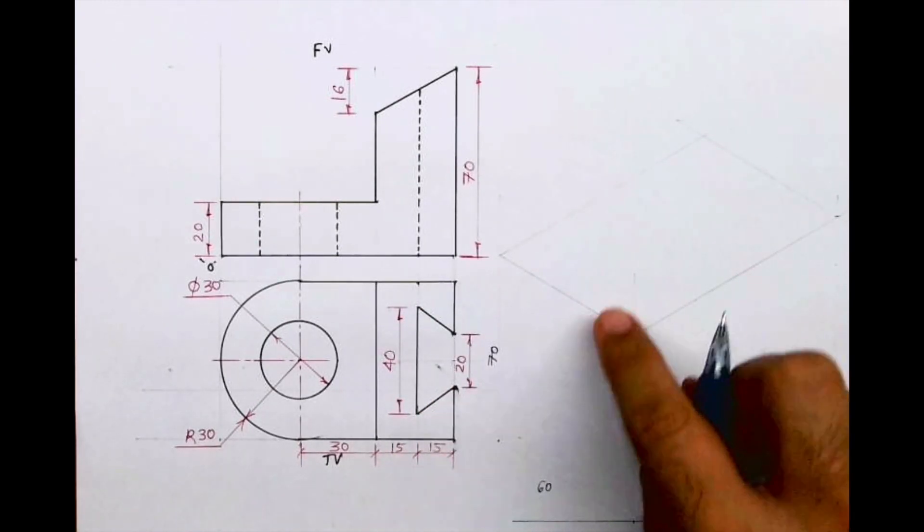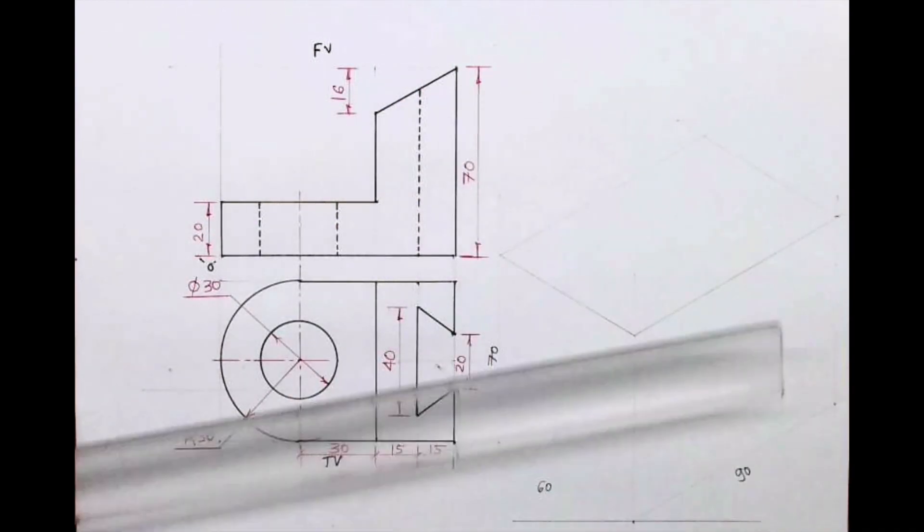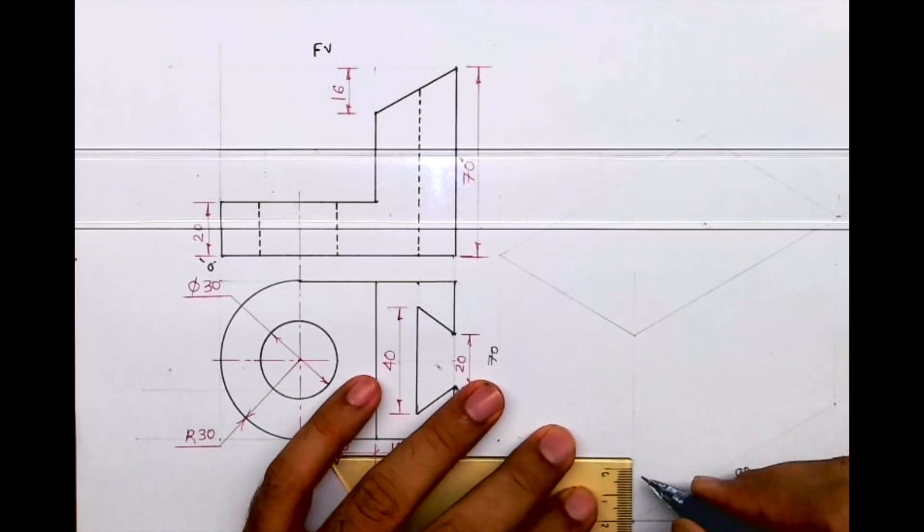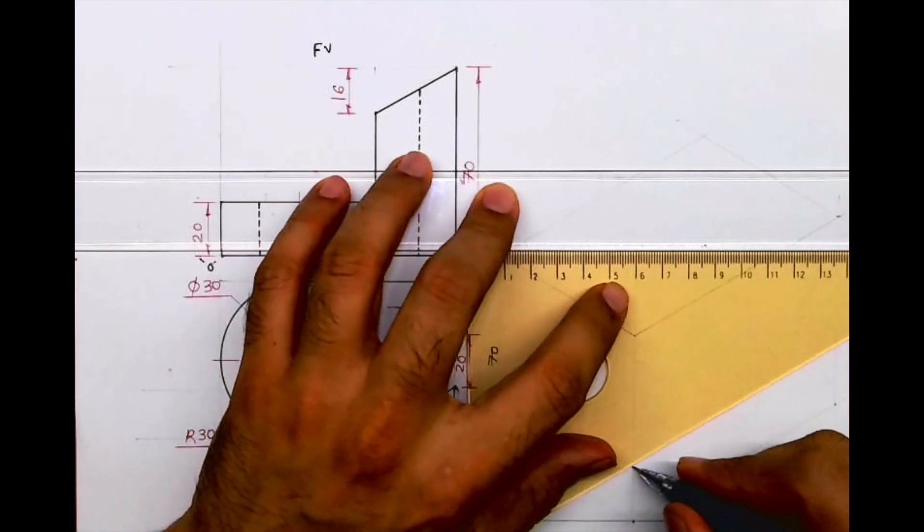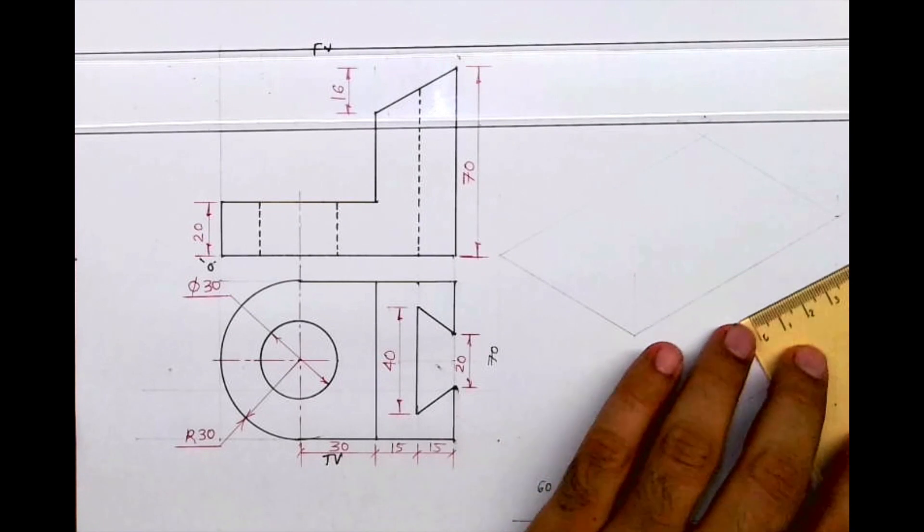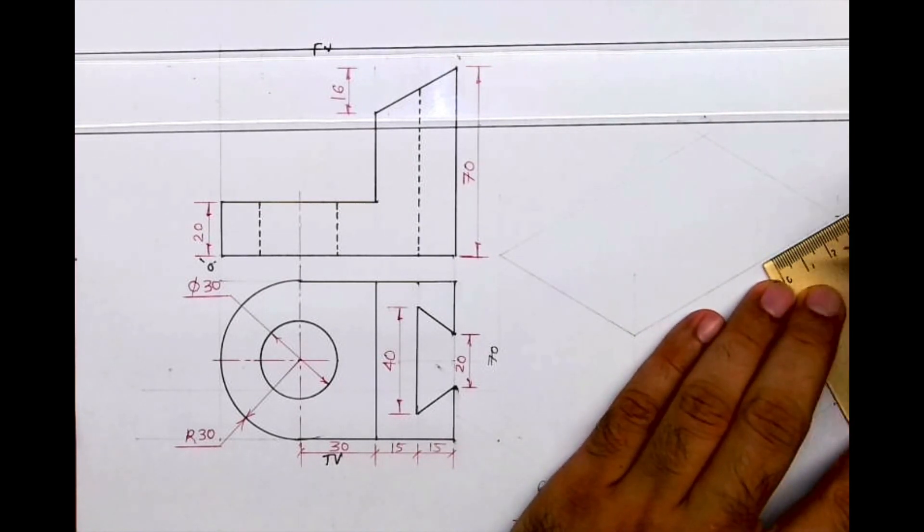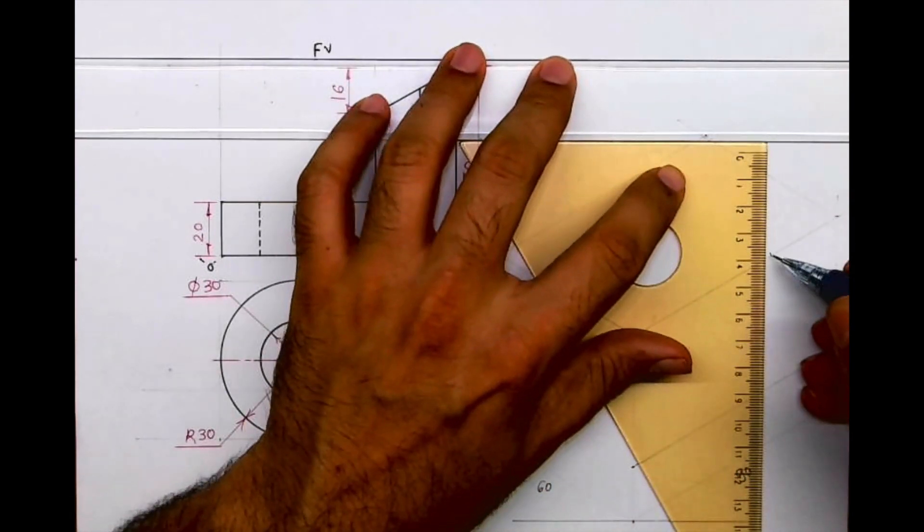So first we will draw layout. After drawing layout I'll draw front view, in that also part one. So I'll take height 20 and extend the line. This is 30, then I'll go down straight.